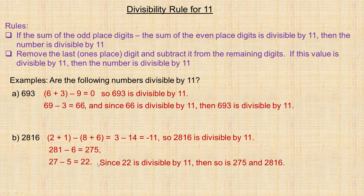Here's a bonus tip that works especially well with three-digit numbers: if the tens digit is the sum of the ones digit and the hundreds digit, the number is divisible by 11. For 275, 5 and 2 add to 7. Same with 693 — 6 and 3 add to 9. So those are both divisible by 11.